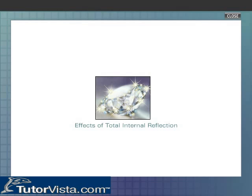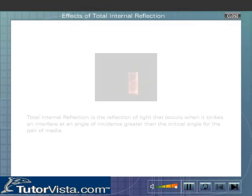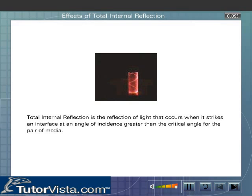Effects of Total Internal Reflection. Total internal reflection is the reflection of light that occurs when it strikes an interface at an angle of incidence greater than the critical angle for the pair of media.